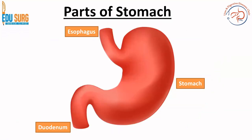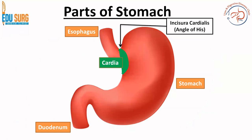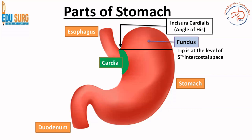Going into details, the parts of the stomach: as we know, from the esophagus once it enters the abdomen starts the cardia. So the first part of stomach is the cardia. Above the cardia where it ends, the esophagus bends and this bend is the angle of His, also known as incisura cardia. If you draw a line from this incisura cardia horizontally, the part of the stomach above this is the fundus. The fundus is the second part of the stomach. The tip of the fundus is at the fifth intercostal space.